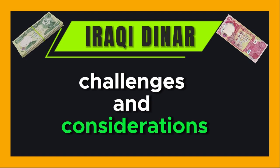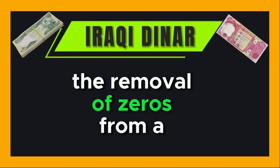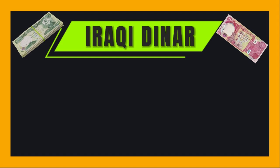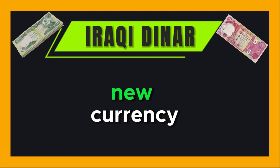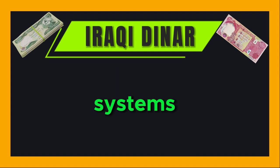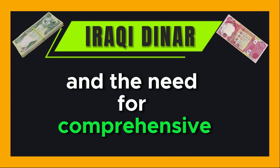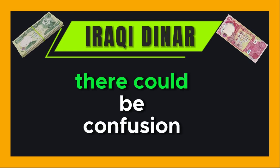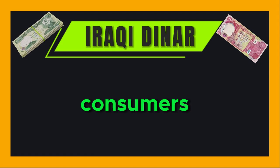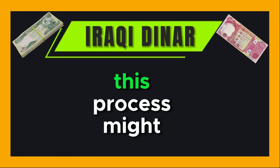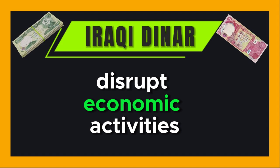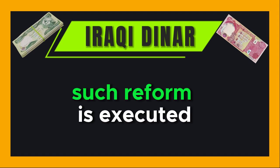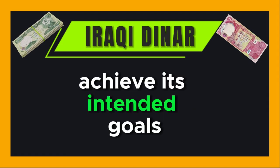The removal of zeros from a currency is a complex procedure that demands careful planning and execution. Challenges include the printing of new currency, modifications to accounting systems, and the need for comprehensive training on how to use the new currency. Initially, there could be confusion among residents and consumers. If not implemented properly, this process might disrupt economic activities. Therefore, it is imperative that any such reform is executed with meticulous planning to achieve its intended goals.